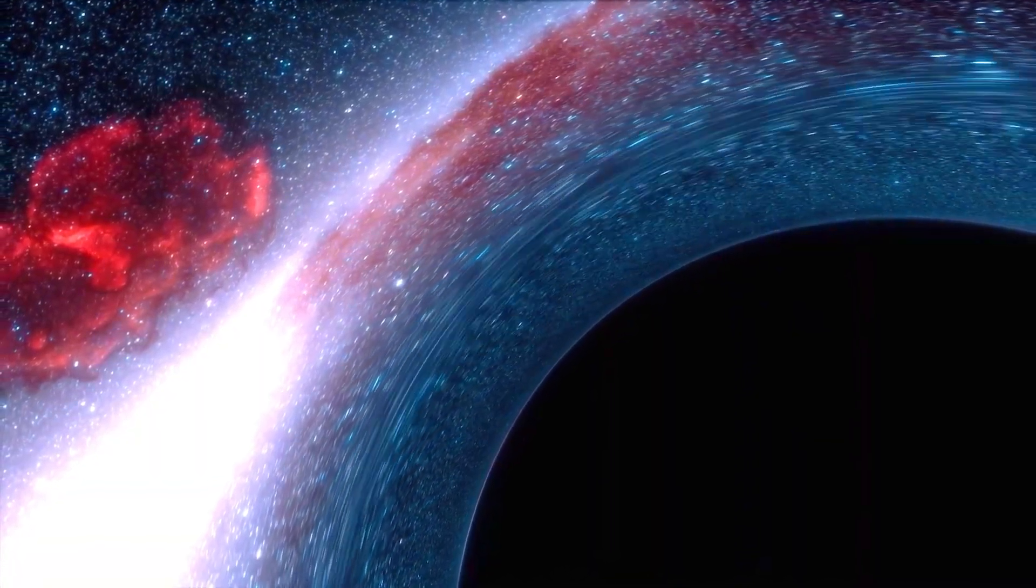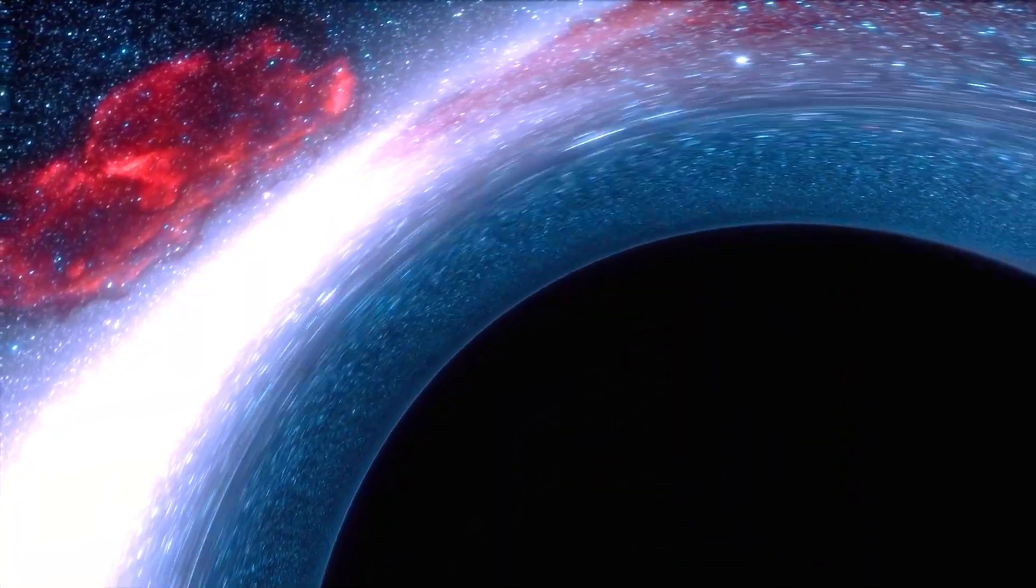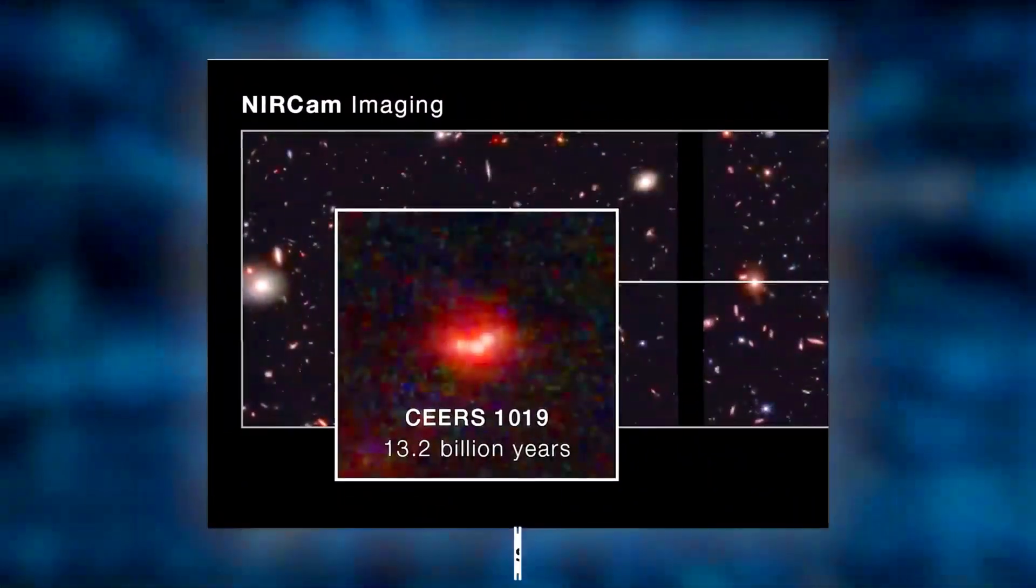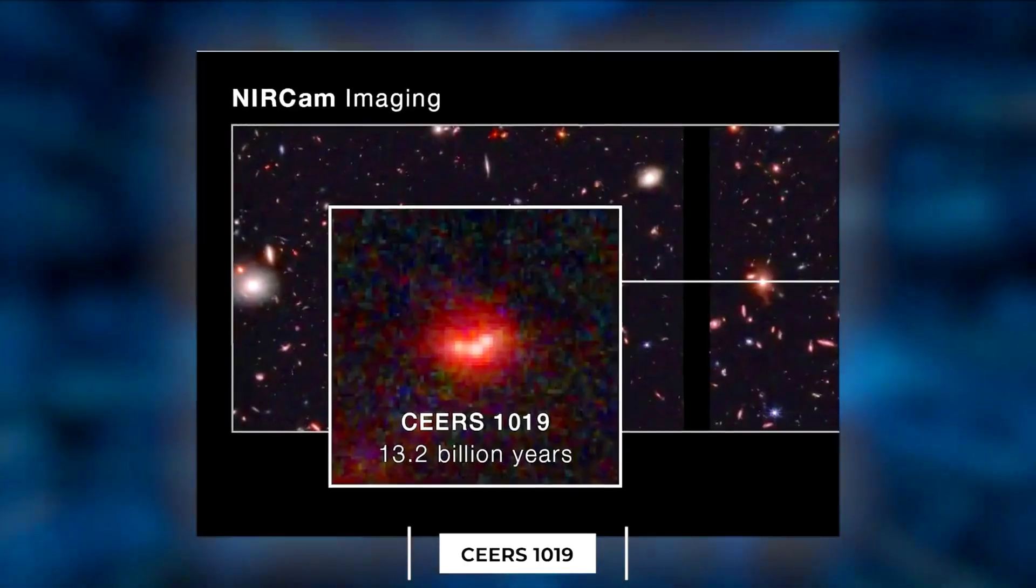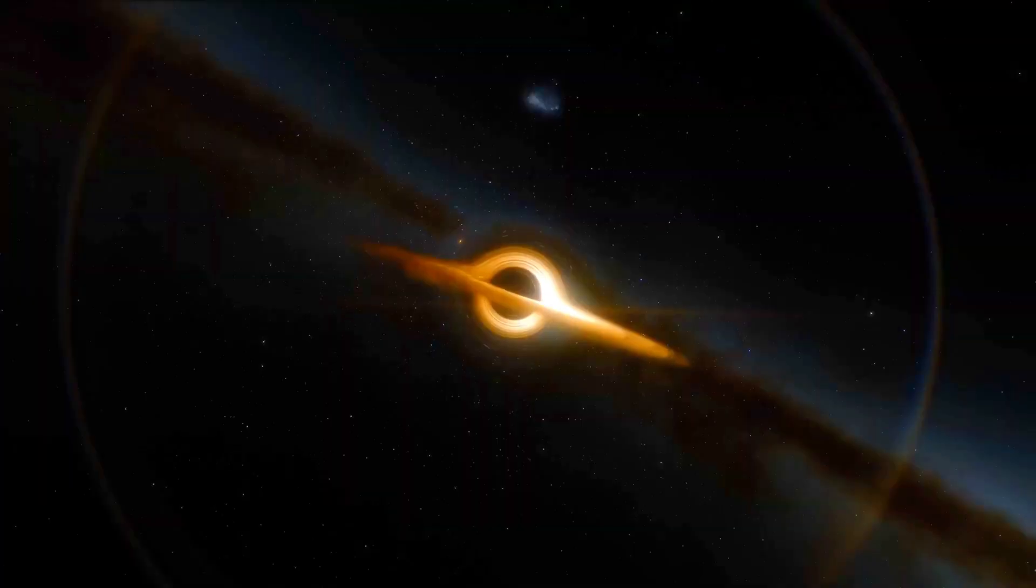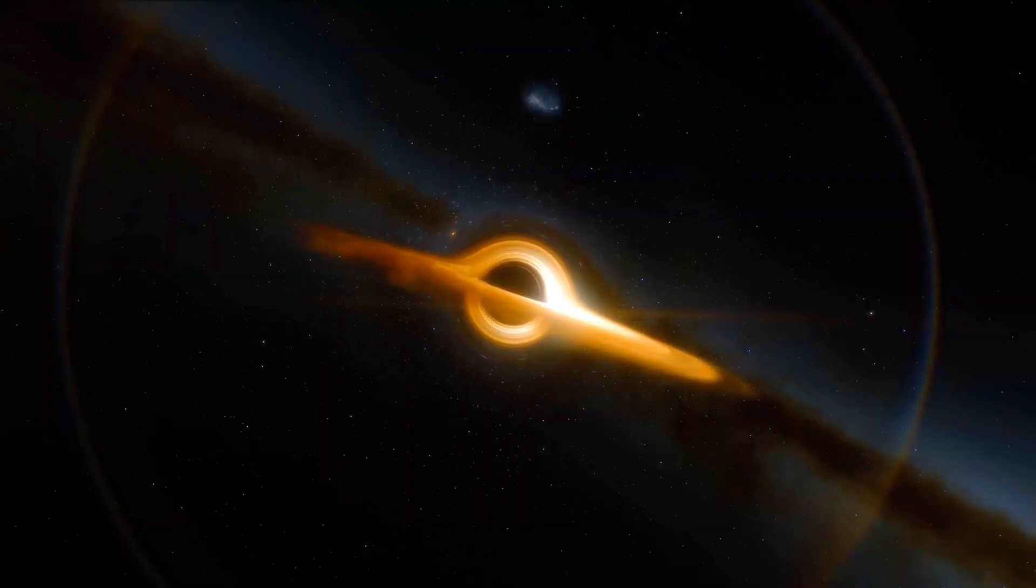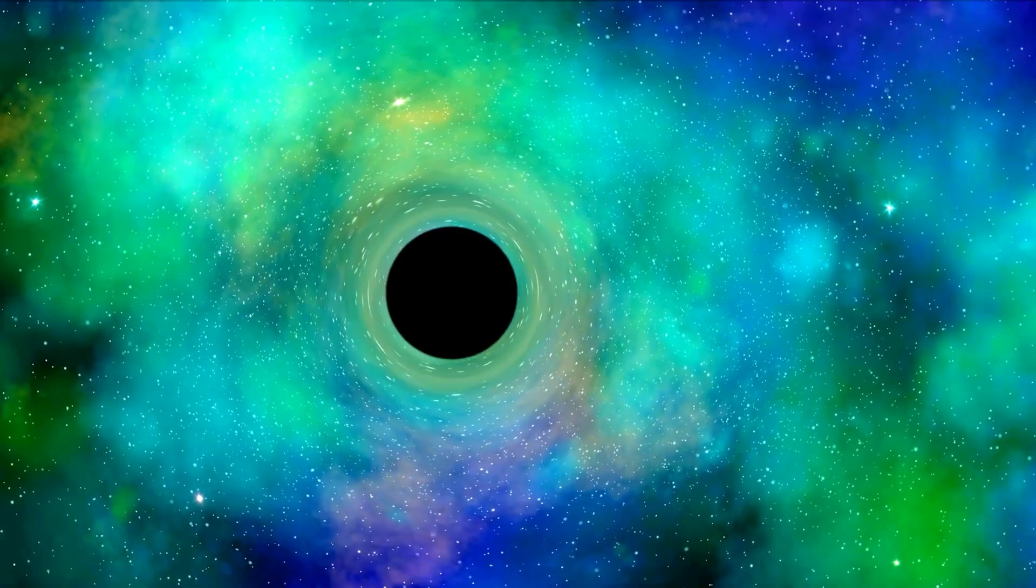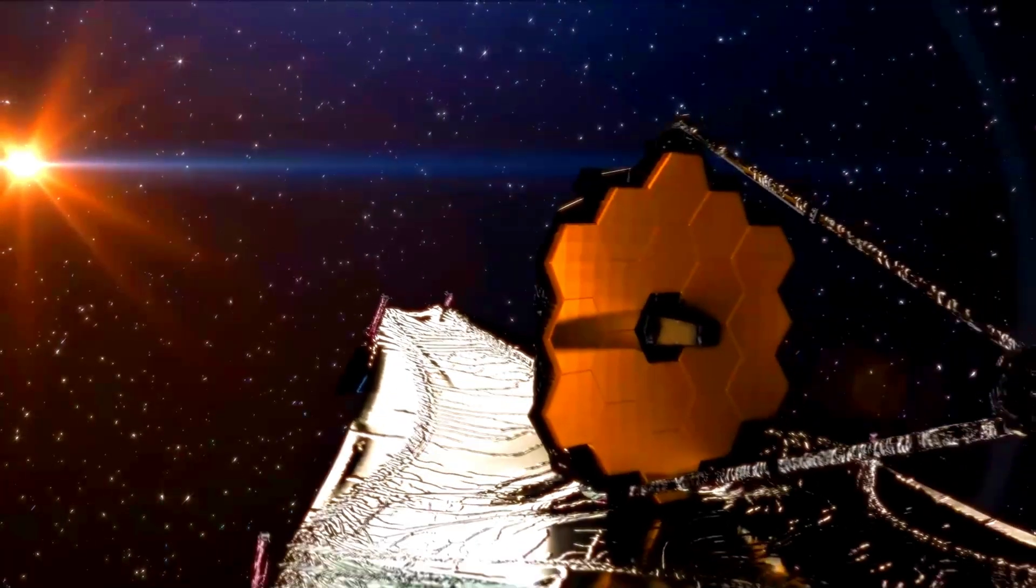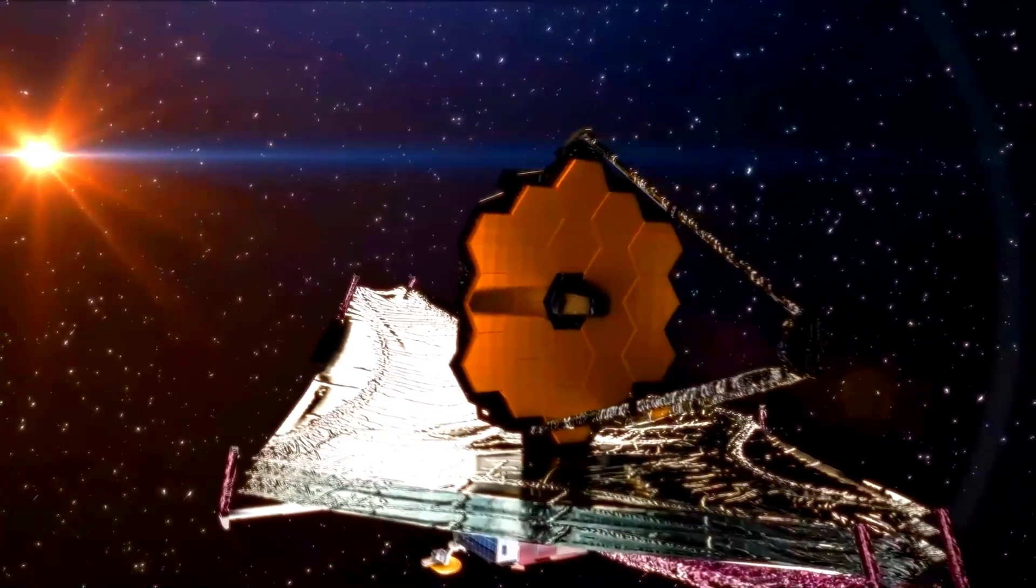The finding hints that black holes and galaxies might have grown together, or that black holes helped galaxies form, rather than the other way around. It opens up the mystery of how fast black holes can grow, and whether there might be even earlier ones hiding in the cosmic shadows. This is more than a physics puzzle—it's a fundamental question about how structure emerges in our universe. JWST may soon uncover even earlier seeds of black holes, revealing how these dark engines shape the fate of galaxies.